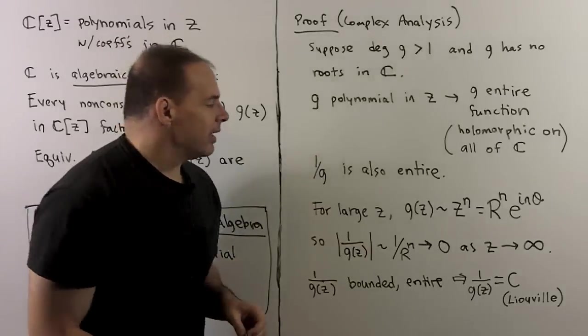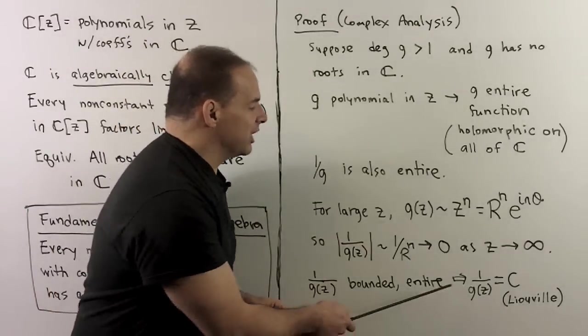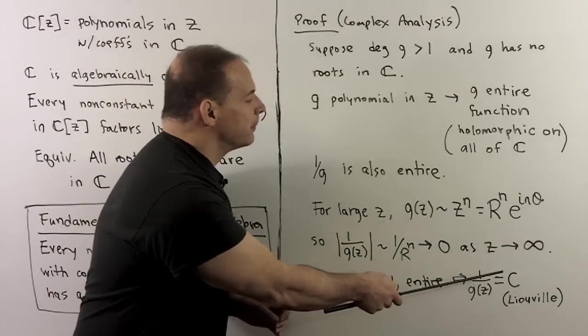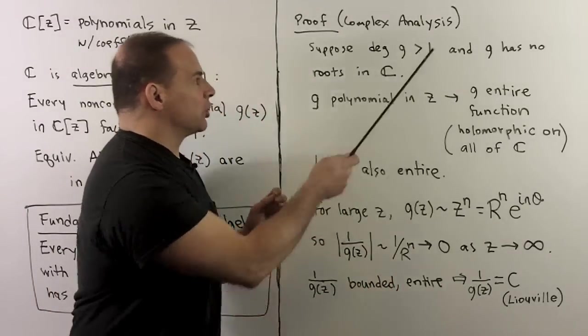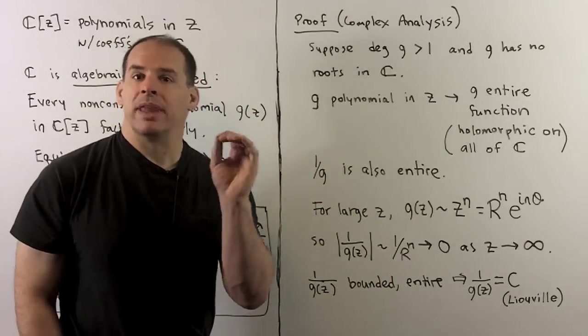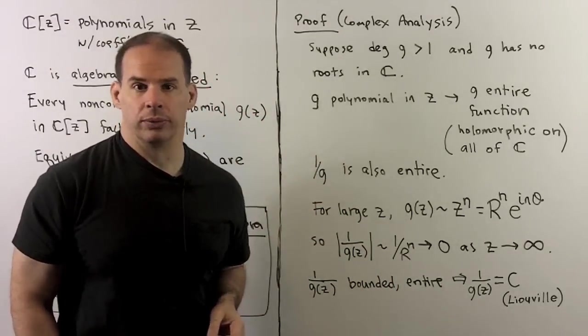In turn, that means g is a constant, and that's a contradiction. So that's our proof.